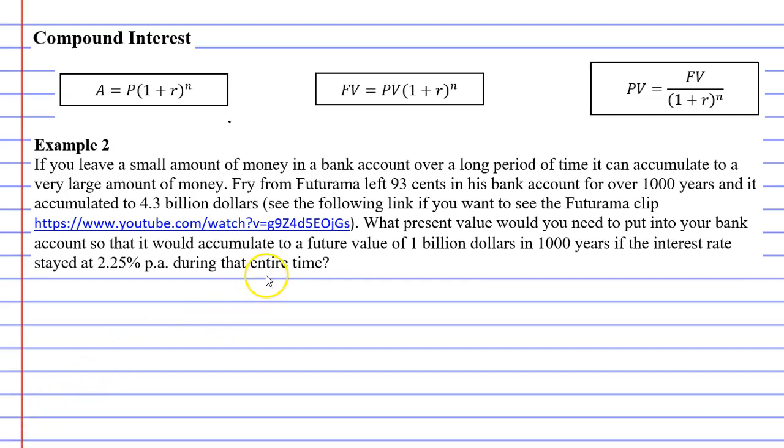Now, we're going to do a question here. What present value would you need to put into your bank account so that it would accumulate to a future value of $1 billion in a thousand years? And they've given an interest rate of 2.25% per annum. So let's work this out.